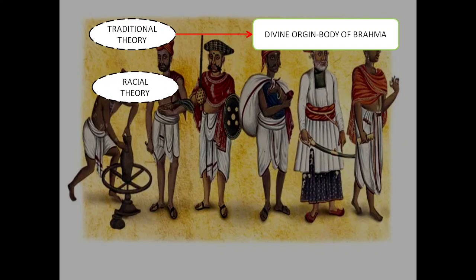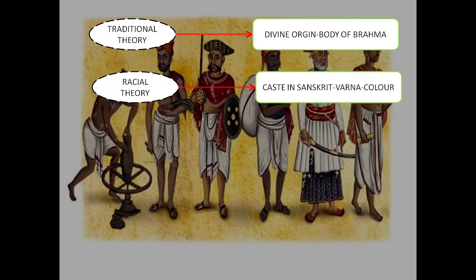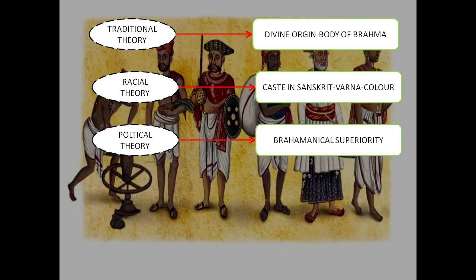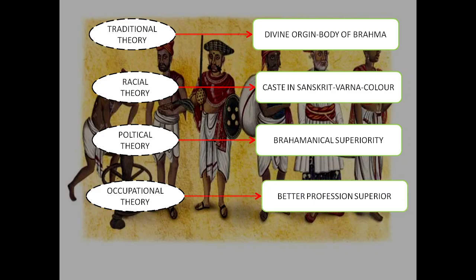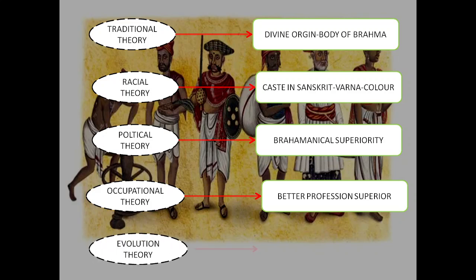Then came the racial theory — the word Varna means color in Sanskrit, and thus it is the racial theory. The third is the political theory, in which Brahmins founded this caste system in order to hold superiority in society. Then the occupational theory, where those who hold better professions hold the highest ranking in society. Finally, there is the evolution theory, which is based on all of the above factors.